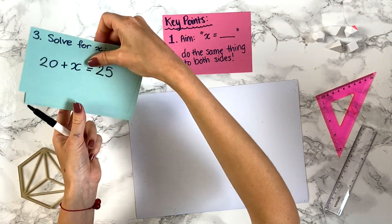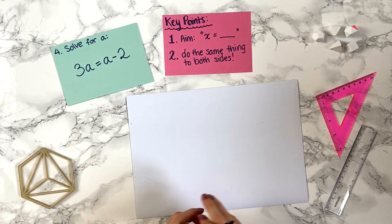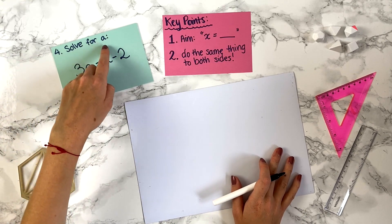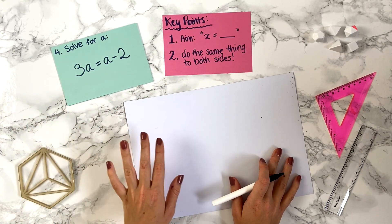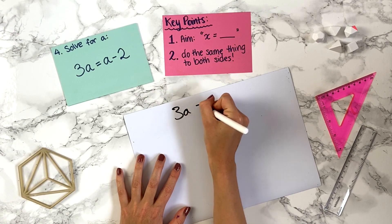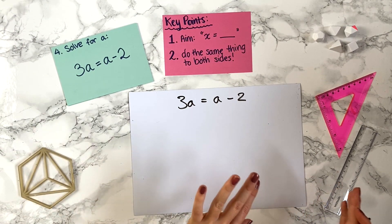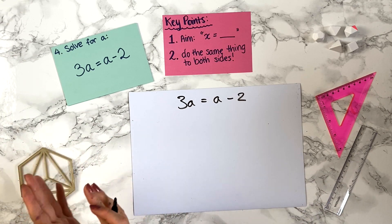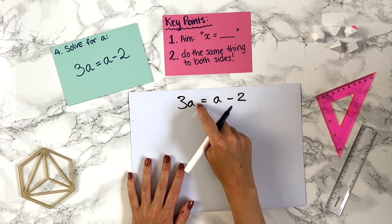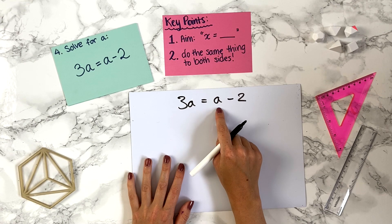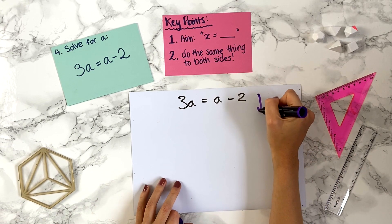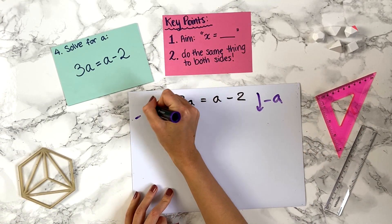Question four: solve for a, 3a equals a minus 2. Don't be put off by the fact it says a instead of x — we're doing the same thing, just with a as the symbol. We want a equals something. The best strategy is to get all the a's on one side and all the numbers on the other. Let's bring all the a's to the left-hand side and get rid of the a on the right.